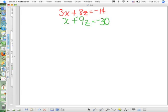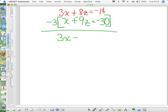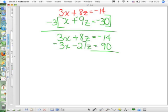Okay, so I'm going to multiply this equation by negative 3. The red equation does not change. The green equation becomes negative 3x minus 27z equals 90. My x is eliminated.